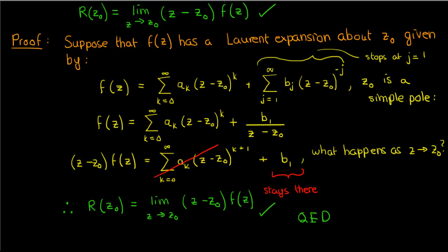To clarify, the reason we use the limit is that f of z is actually undefined at z0 — z0 is still a pole. If you multiply f of z by (z minus z0) and evaluate at z0 directly, you get 0 over 0 which is indeterminate. Using the limit avoids that issue and everything turns out correctly.